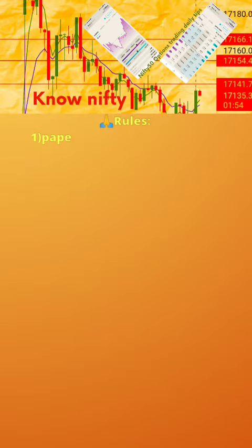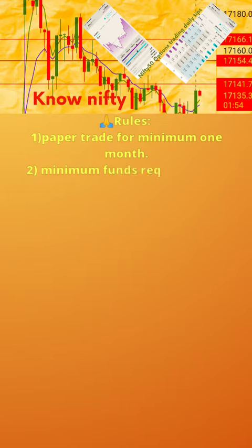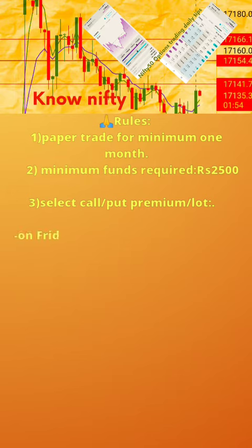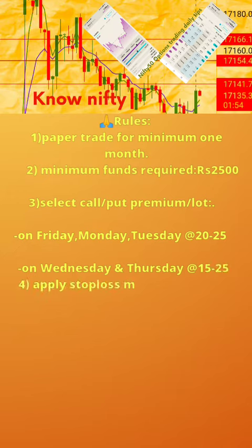Please follow the 7 rules below. 1. Paper trade for minimum 1 month. 2. Minimum funds required: 2500 rupees. 3. Select call or put premium per lot — on Friday, Monday, Tuesday at the rate of 20–25; on Wednesday and Thursday at the rate of 15–25.